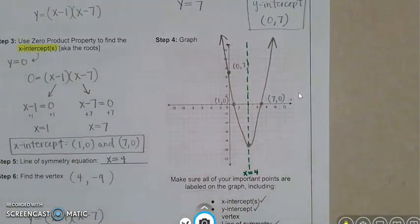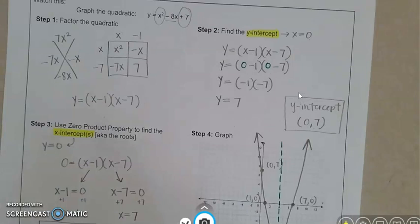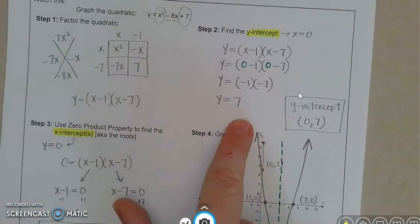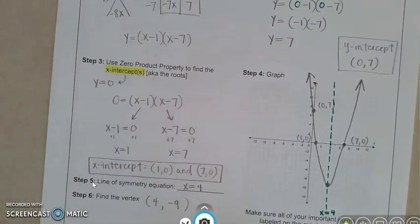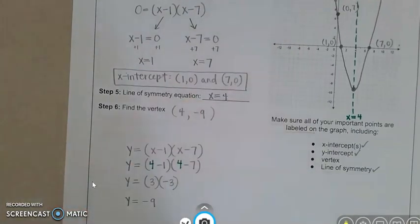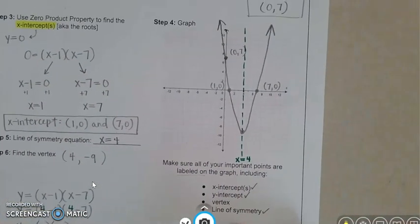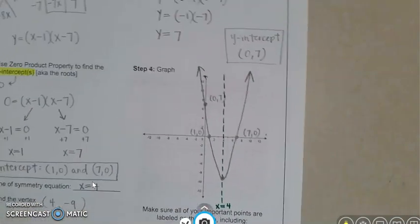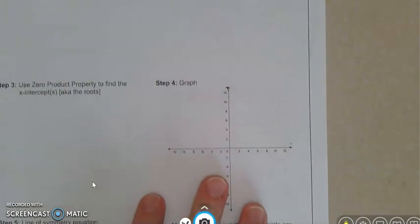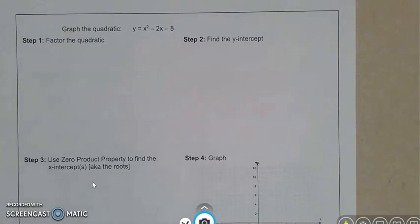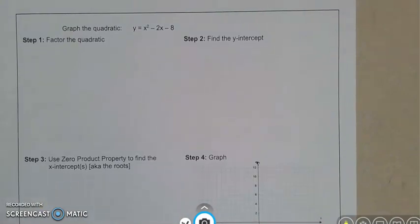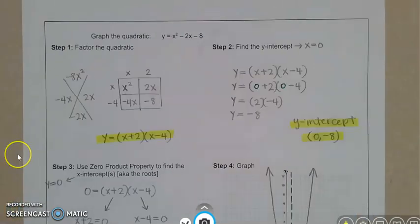So we just did a lot here. We did six steps. We started with factoring. We then found our y-intercept. We then found our x-intercepts. We also found our line of symmetry and our vertex and graphed them all together. And so if we click the page, there's another practice problem here. Go ahead and pause the video. While it's paused, I will work on the answers. You work on the answers. And then I will put my answers up and you can see how you did.